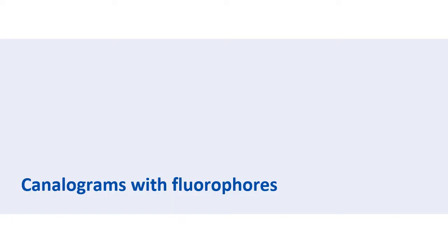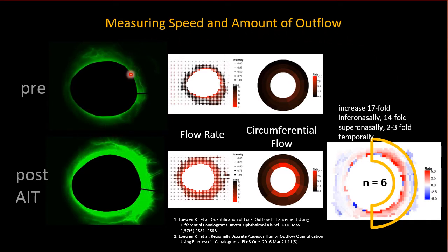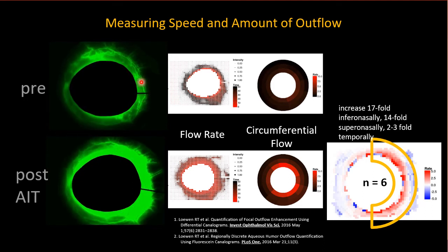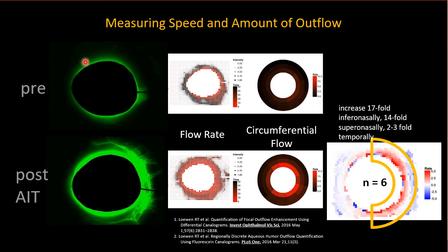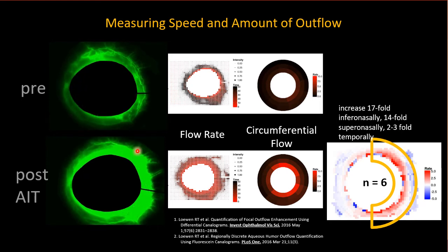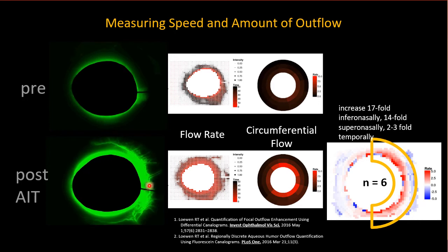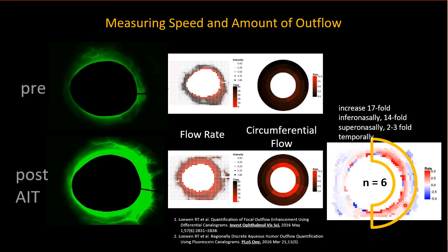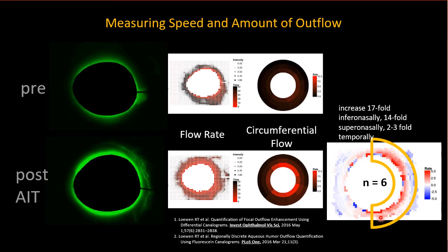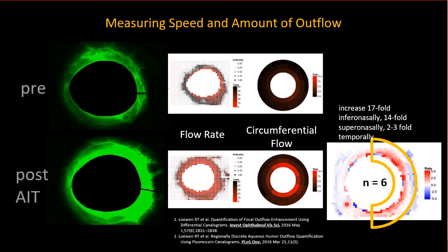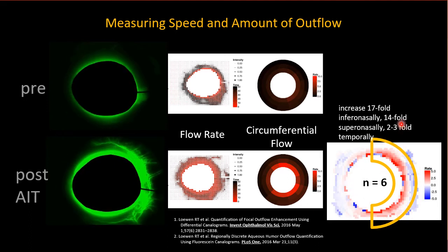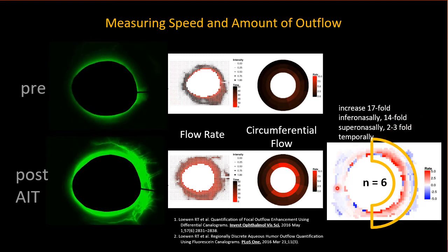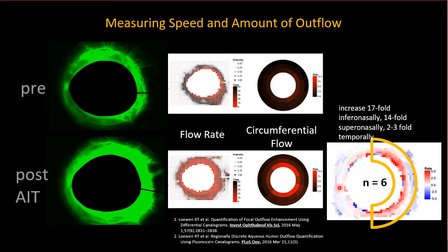Canalograms with fluorophores. We used fluorescein in a pig eye showing early nasal filling that then flows around and starts filling elsewhere. When the nasal trabecular meshwork is removed, there is very rapid filling nasally that then washes around toward the temporal side. This is apparent in an overlay heat map of six eyes showing rapid nasal filling but also faster temporal filling. Nasally there is a 17- to 14-fold increase, while temporally there is a 2- to 3-fold increase of outflow speeds.